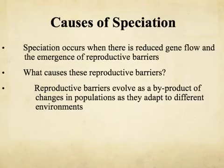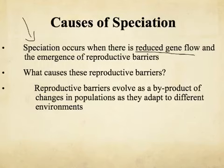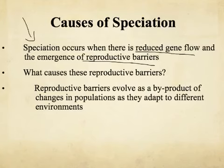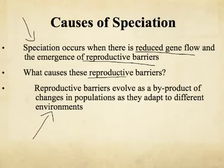Speciation basically occurs when there is reduced gene flow between two populations — when two populations aren't mixing, they become more and more different because they're responding to different environmental selection factors via evolution. These differences cause reproductive barriers, things that prevent them from reproducing. Reproductive barriers are just a byproduct of the way different populations adapt differently to different environments.